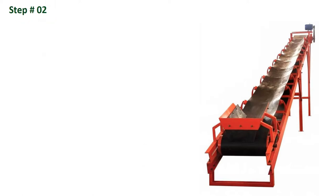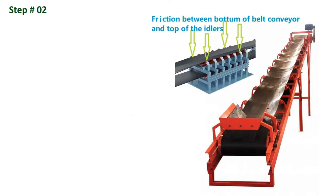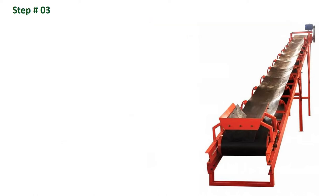In step two, we need to know the friction between the bottom of the belt layer and the top of the belt. The coefficient of friction is 0.5, which is a standard coefficient for a conveyor belt.